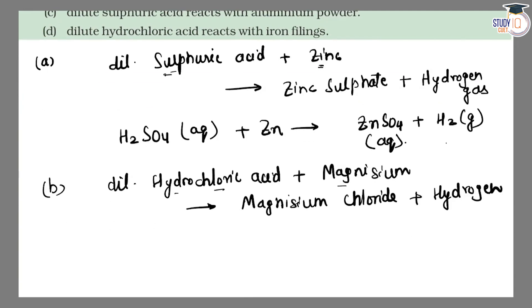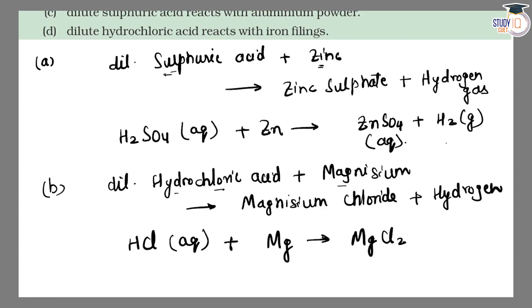Balanced equation: HCl (aqueous) + Mg → MgCl₂ (aqueous) + H₂ (gas).